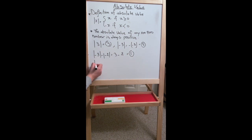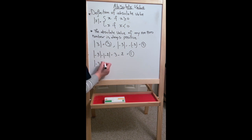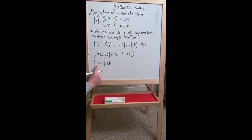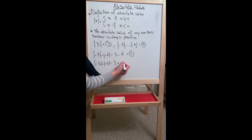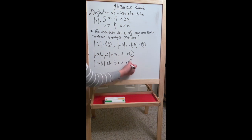Another example: the absolute value of -3 plus the absolute value of -2. Since -3 is negative, we change it to 3, keep the plus, then since -2 is negative, we change it to 2. So we get 3 plus 2, which equals 5.